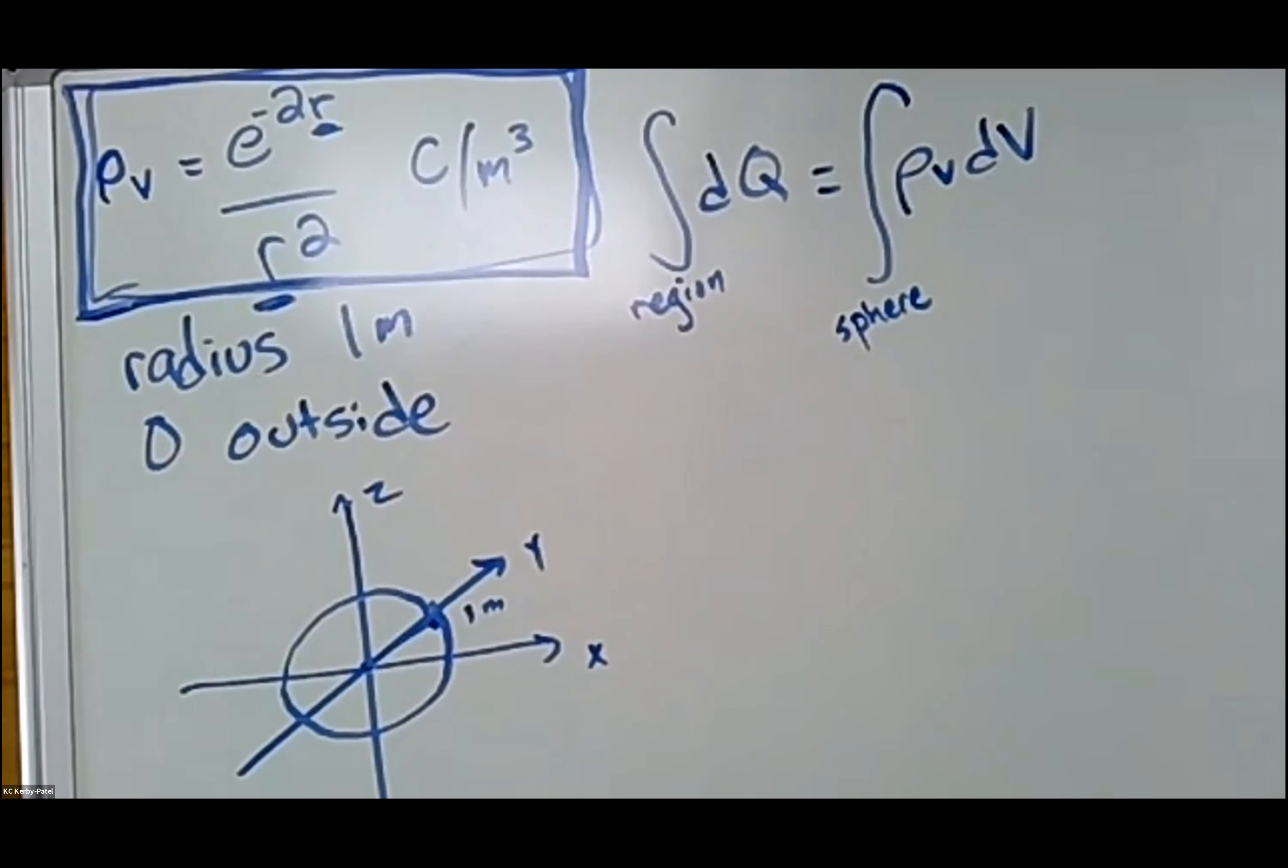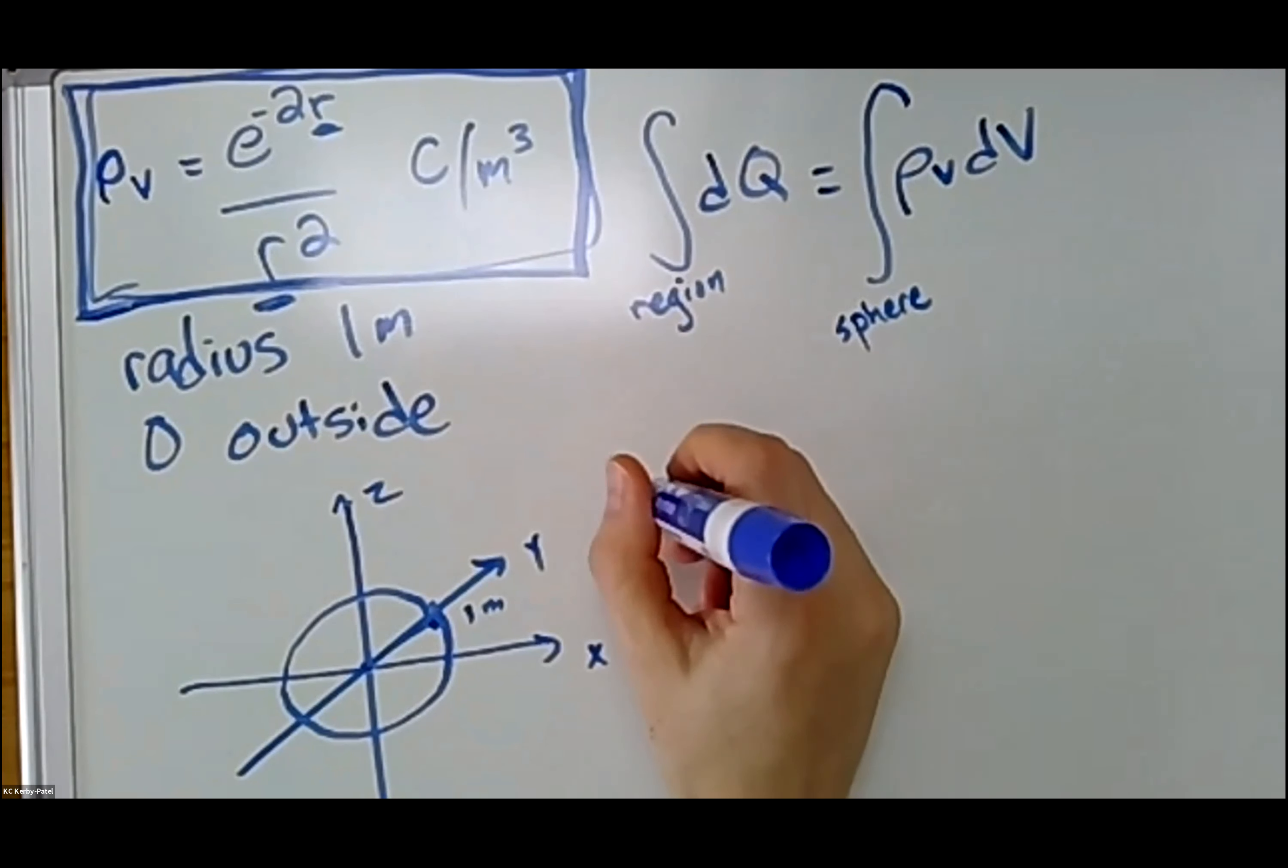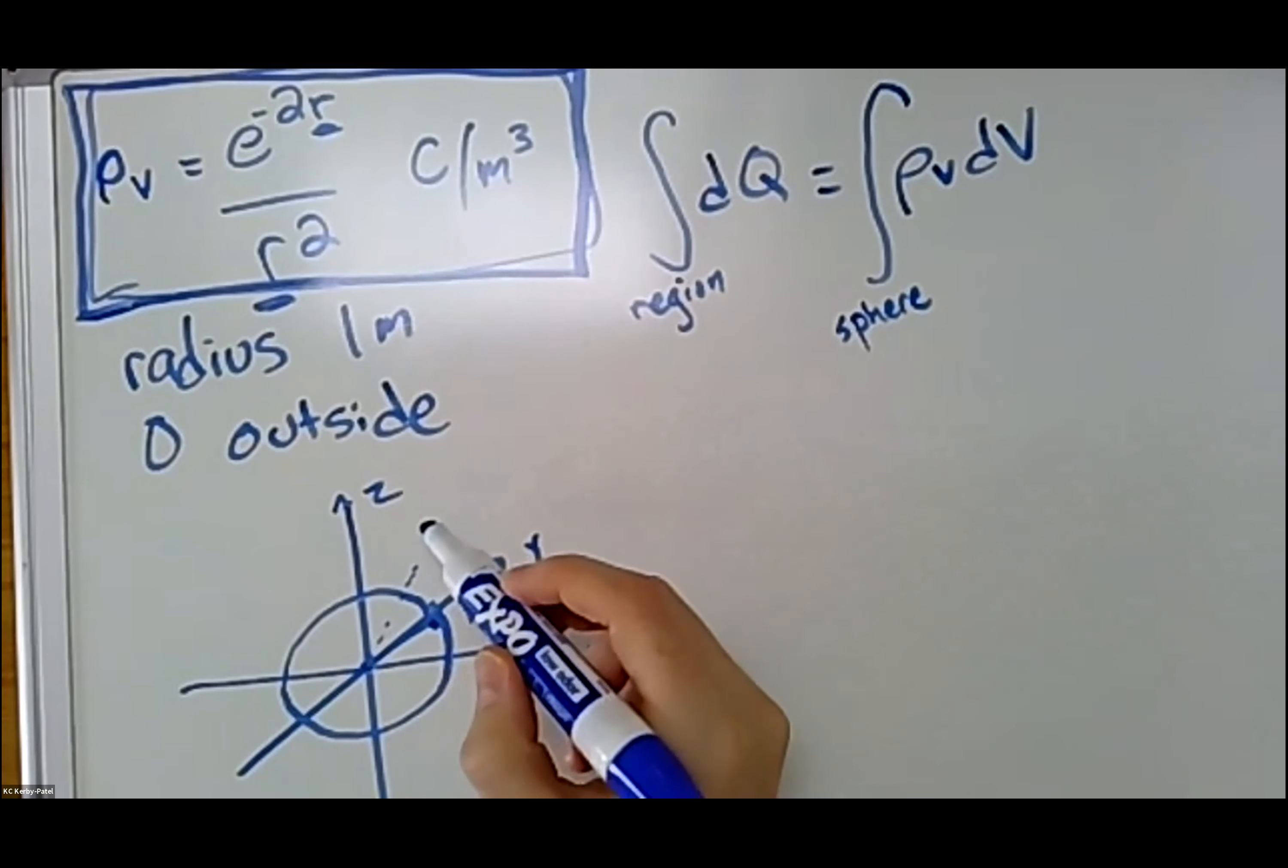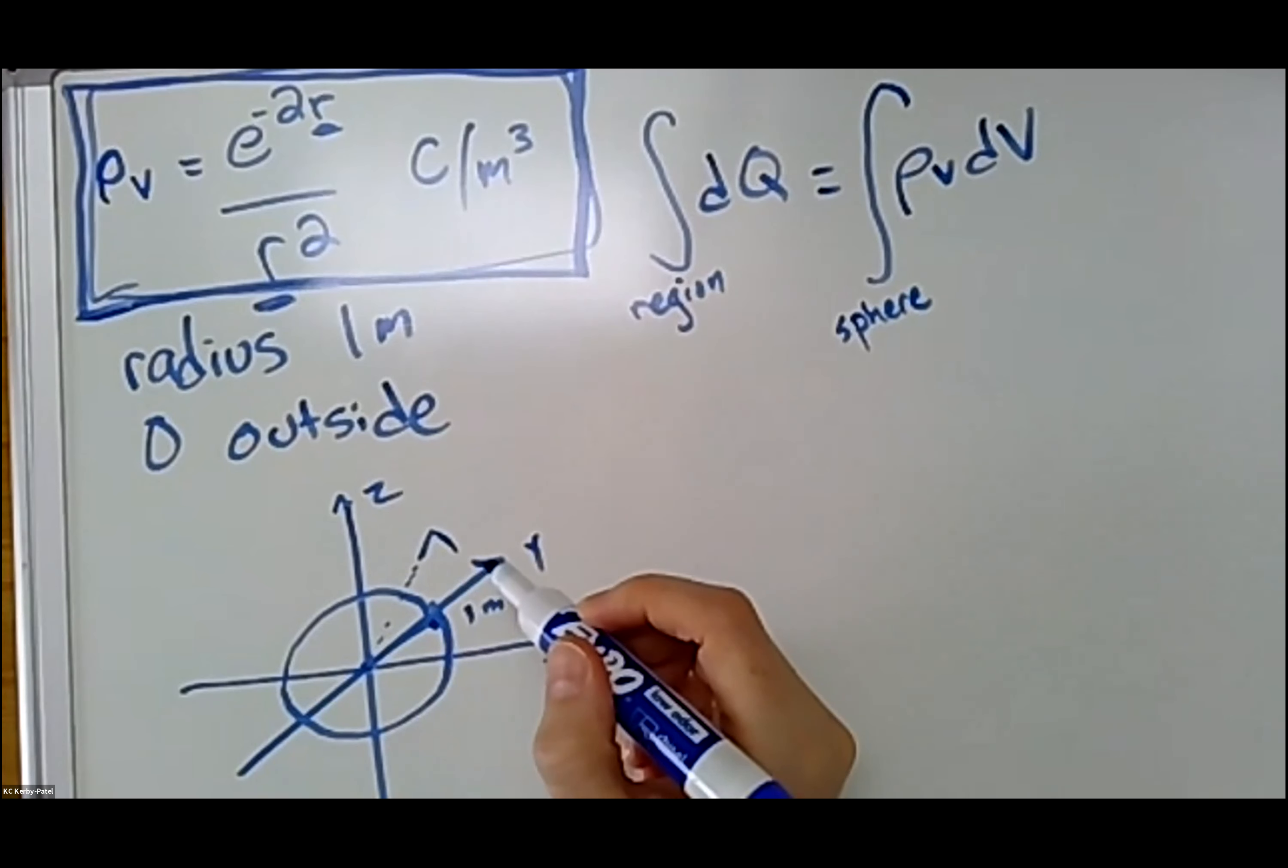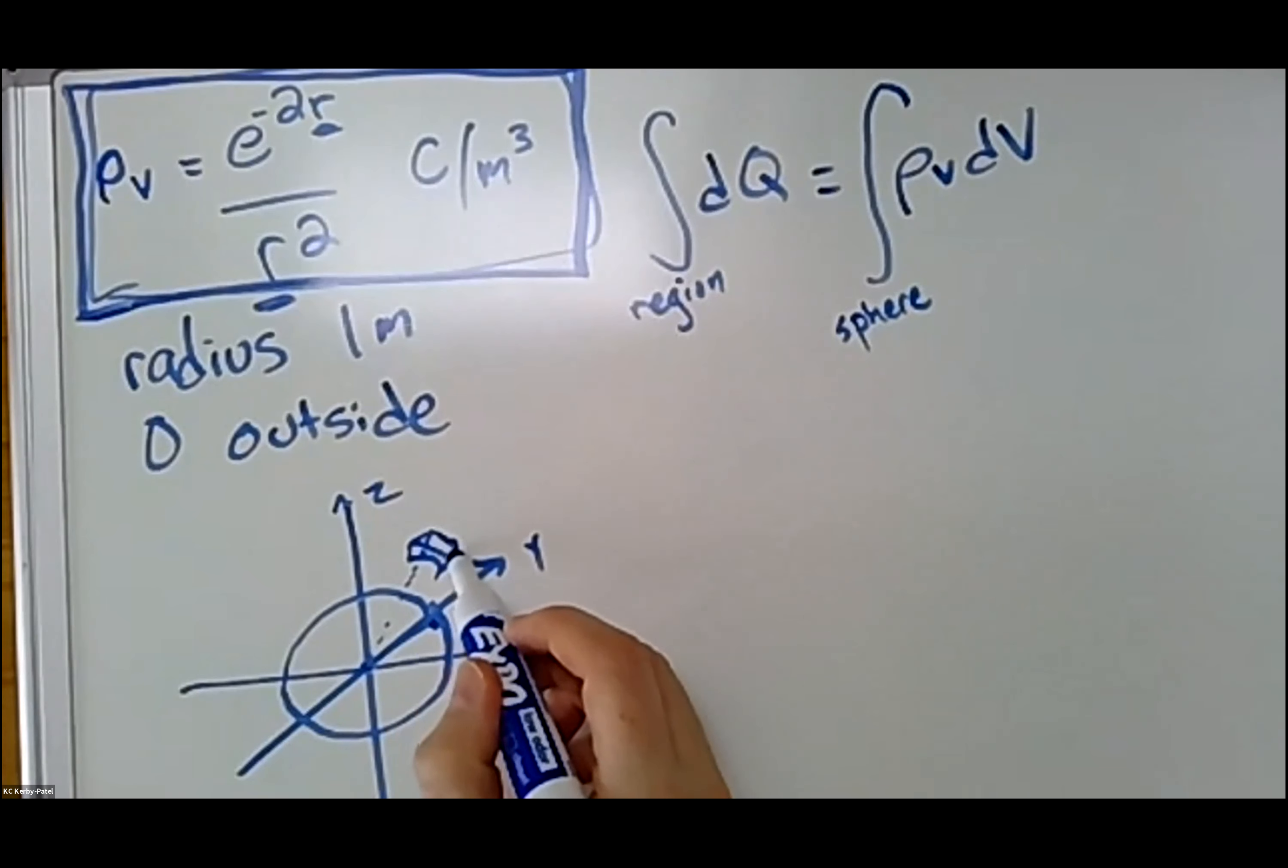Well, we're integrating over a sphere. This is expressed using r, little r here, so that kind of indicates that we're working in spherical coordinates. So the next thing that I should do is write down dV in spherical coordinates. Now you all worked this out, but if you remember, if I were to write down my little differential volume element, it has dimension dr in the radial direction, r dθ in the theta dimension, and r sin(θ) dφ in the phi dimension.